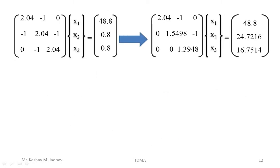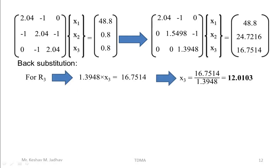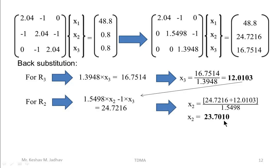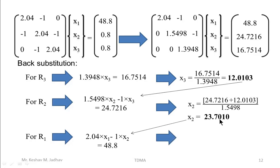Now we perform back substitution, similar to the Gauss elimination method. From the last row (R3): x3 = R3' / F3' = 12.0103. From R2: x2 = (R2' − G2 × x3) / F2' = 23.7010. From R1: x1 = (R1 − G1 × x2) / F1 = 35.5397.